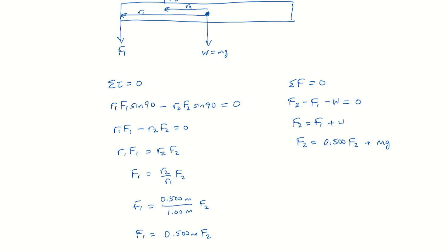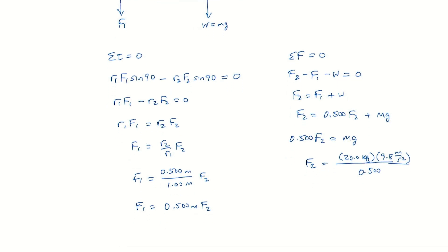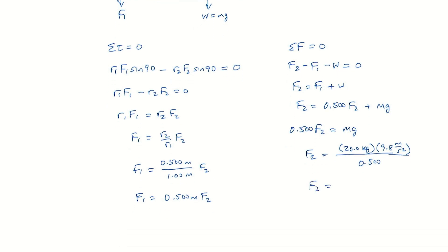We'll subtract that 0.500 F2 from both sides, and we get 0.500 F2 is equal to Mg. And so F2 is the mass, which is 20 kilograms times g, which is 9.8 meters per second squared, divided by the 0.500, we find F2 is 392 newtons.